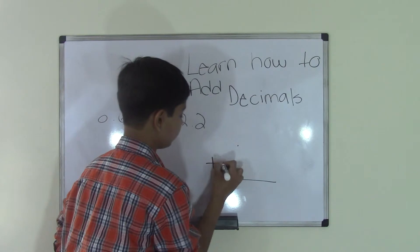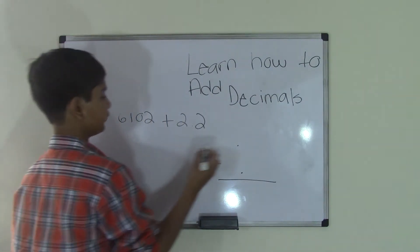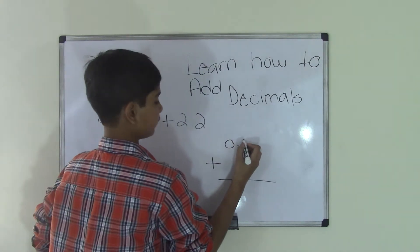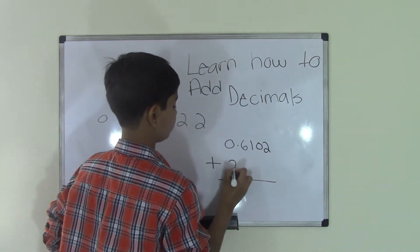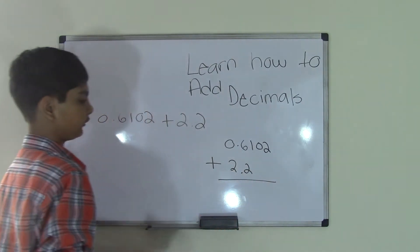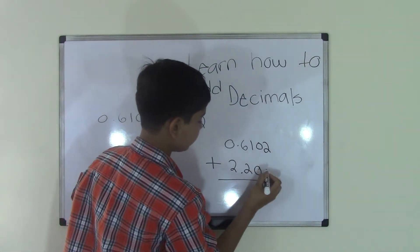Let's go ahead and add the sign. And now we have to put in the numbers. So 0.6102 and 2.2. Now remember, I told you that wherever there's no numbers, you can always add 0s to make it easier.